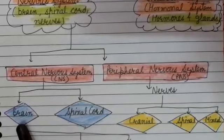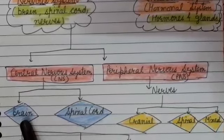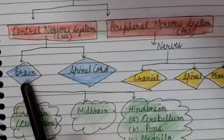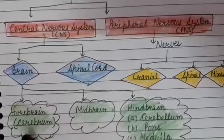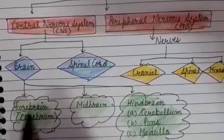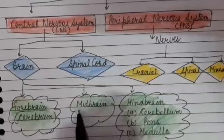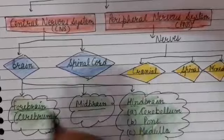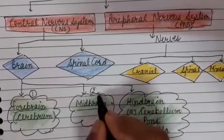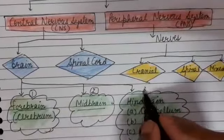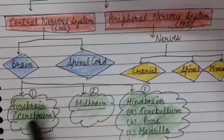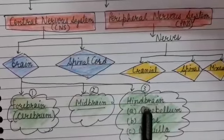Today our first topic is the Brain. The Human Brain is divided into three parts: Forebrain, Midbrain, and Hindbrain. We will study these parts in detail now.